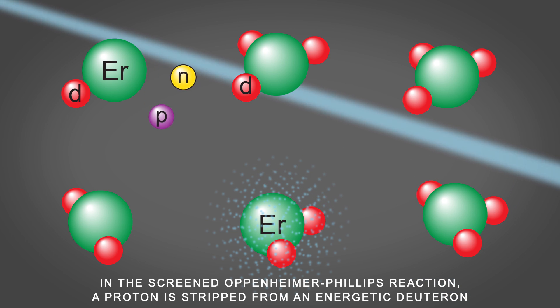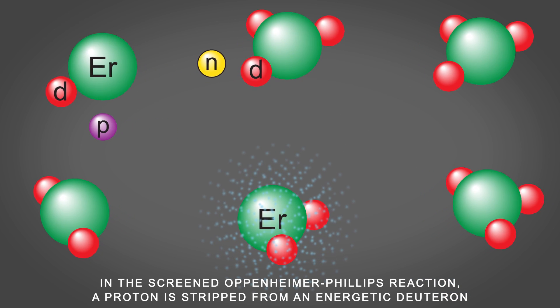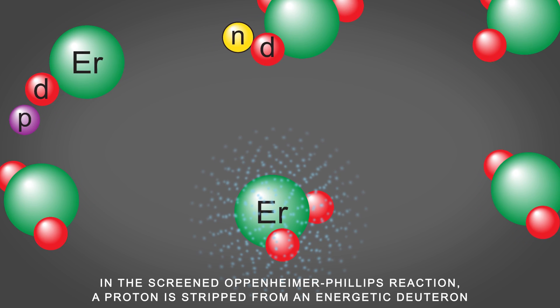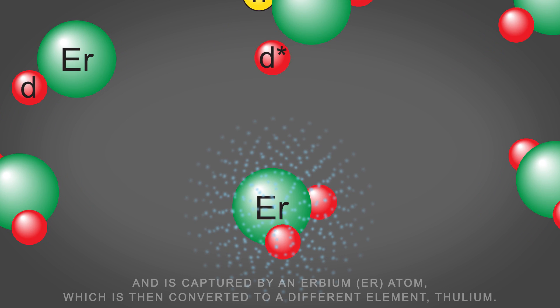In the screened Oppenheimer-Phillips reaction, a proton is stripped from an energetic deuteron and is captured by an erbium atom, which is then converted to a different element, thulium.